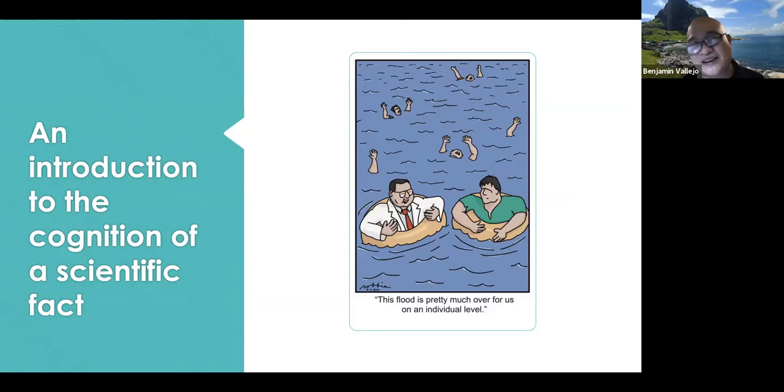It really tells us this whole idea of cognition. For the doctor that is being lampooned, the flood is pretty much over on an individual level. The flood is actually the number of cases of COVID-19 in the country. He could cognize that we are really over the number of cases in the pandemic while other people are drowning. Your cognition may be conditioned by some of the circumstances that you have which other people don't have.